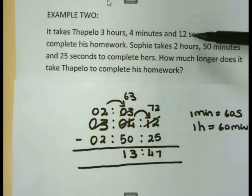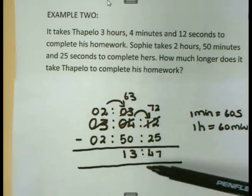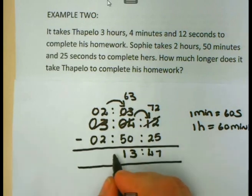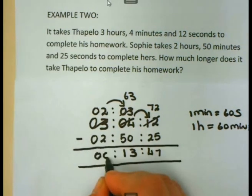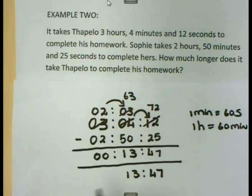So the time that is the difference between 3 hours, 4 minutes, and 12 seconds, and 2 hours, 50 minutes, and 25 seconds is 13 minutes and 47 seconds. You are allowed to write 0, but it is not necessary. You can just write 13 minutes, 47 seconds, since there are 0 hours.